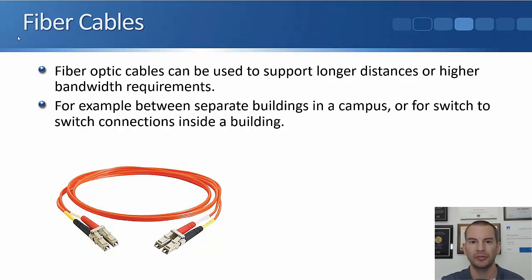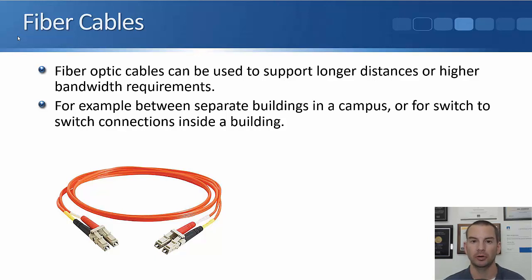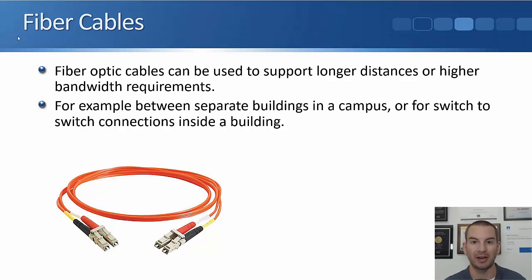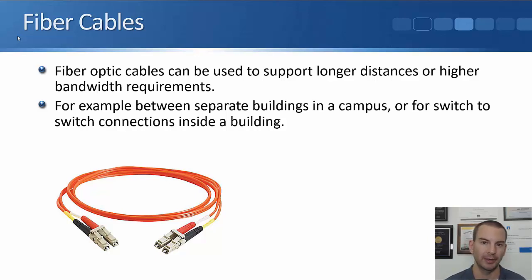Moving on to fiber. Fiber supports longer distances and higher bandwidth than is possible with copper. You would use fiber cable when connecting between two separate buildings within the same campus — we're still talking about the local area network here. In a campus environment, like a university, connections between switches in different buildings will typically use fiber optic cables. Fiber is also used for switch-to-switch connections inside a building, because higher bandwidth is typically required between switches and copper might not be sufficient.